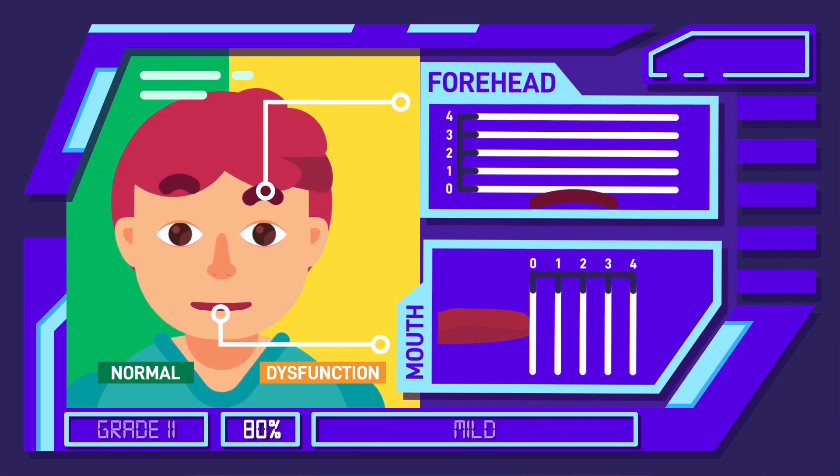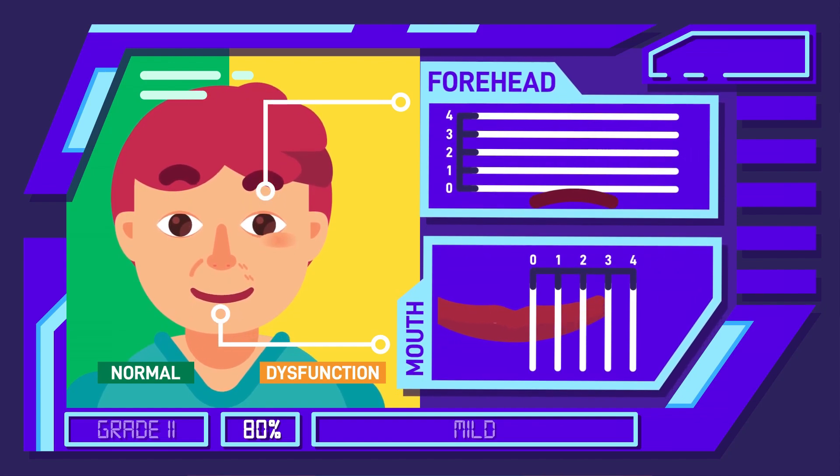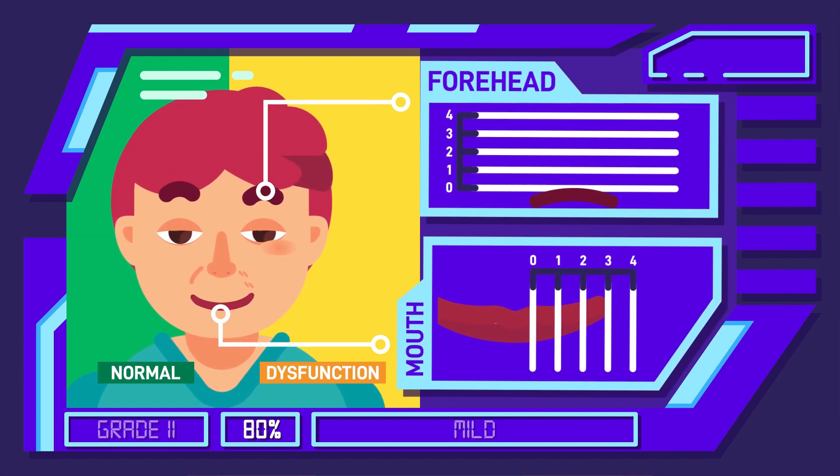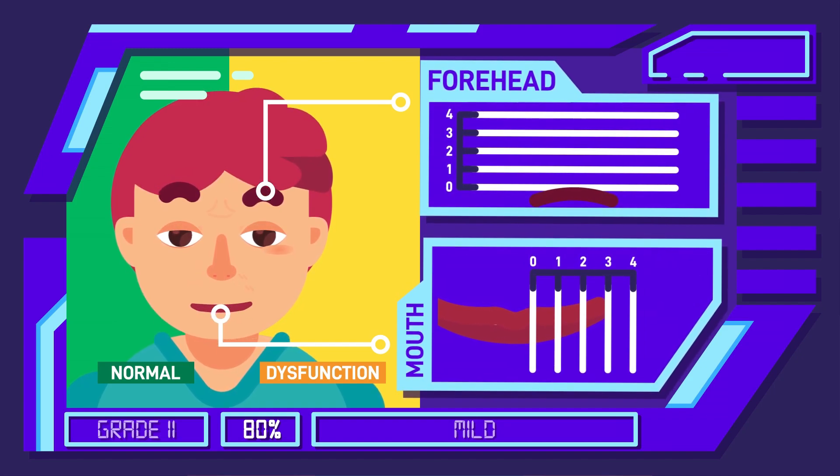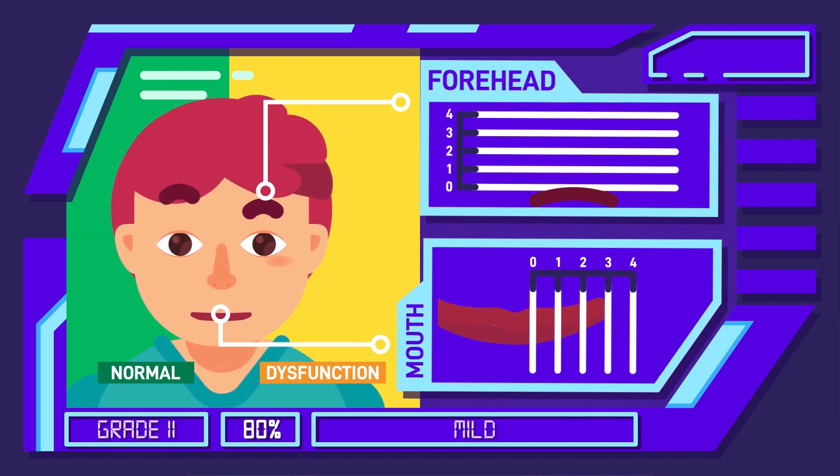Their eyes can be closed completely with minimal effort, but synkinesis, or the involuntary muscle pull or spasm that follows a voluntary movement, may slightly be present in the area of the nose, cheek or mouth.